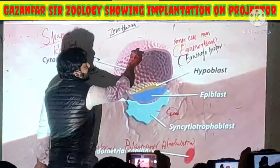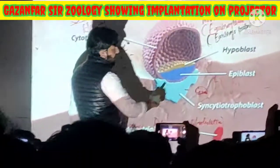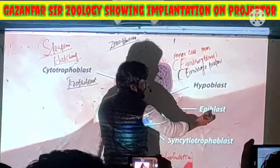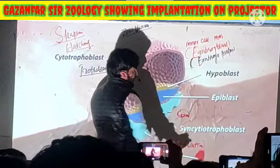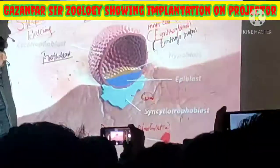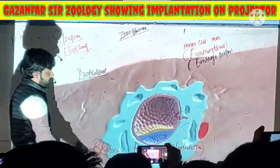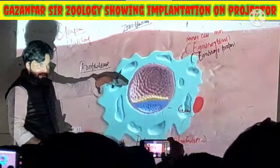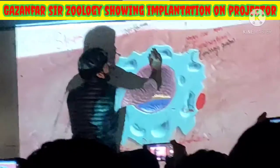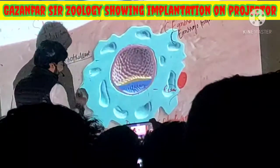The inner layer is called the cytotrophoblast. After that we will study about the hypoblast. The blastocyst becomes completely embedded, and you can see there is a complete covering of the syncytiotrophoblast around these structures.